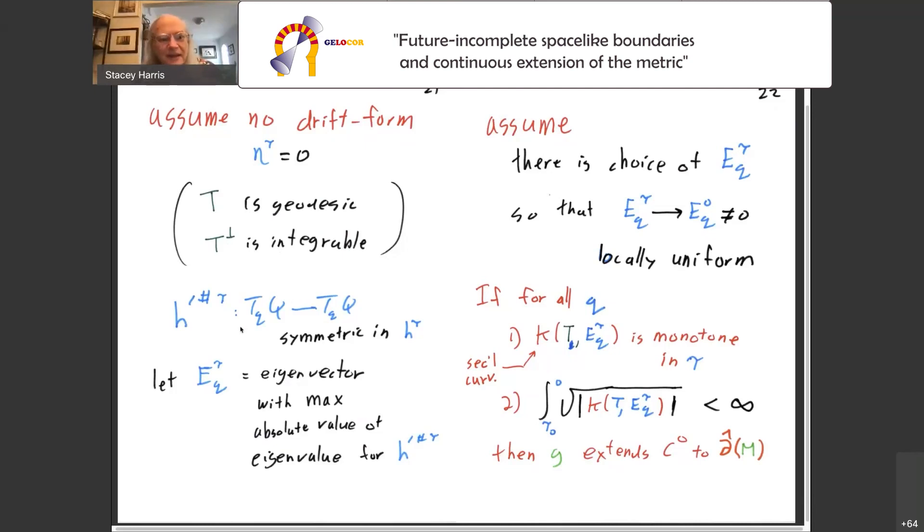So I have to make another assumption. H'sharp is a 1-1 tensor from Q to itself. Well, it's symmetric, therefore it has a complete set of eigenvectors. Pick E to be that eigenvector which gives the highest absolute value for the eigenvalue. That's the one that really controls how big H'sharp is. So E is that eigenvector with the biggest eigenvalue. So I'm going to make one further assumption that I can make a choice of these eigenvectors so that the E tau converges to E zero in a non-zero manner, and I can do this in a locally uniform manner.